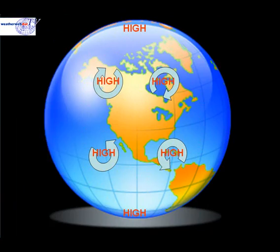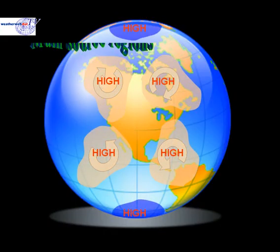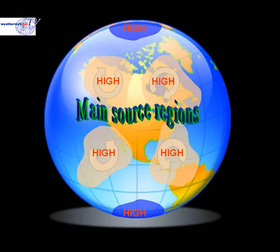Where do air masses form? Air masses tend to form around the areas of high pressure in the subtropics and also close to the poles. The reason for this is that the air within these areas is very slow moving, so the air tends to pick up the characteristics of the land or the sea that it's over. We know these high pressure regions as the main source regions for air masses.